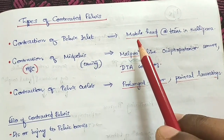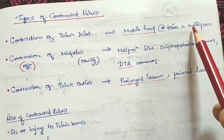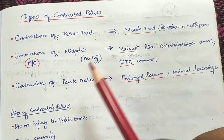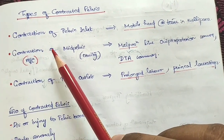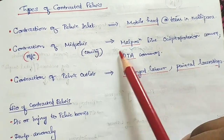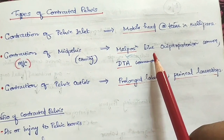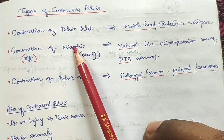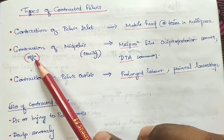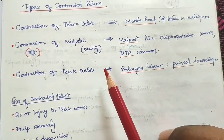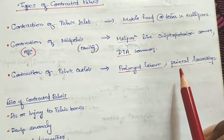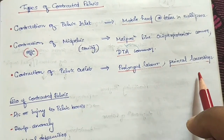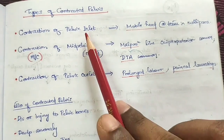Contraction of the pelvic inlet results in a mobile head at term in a nullipara, meaning the head is floating and not engaged. In mid-pelvic contraction, there will be malposition such as occipital posterior position with deep transverse arrest being most common. Contraction of the pelvic outlet causes prolonged labour with a higher chance of perineal lacerations.